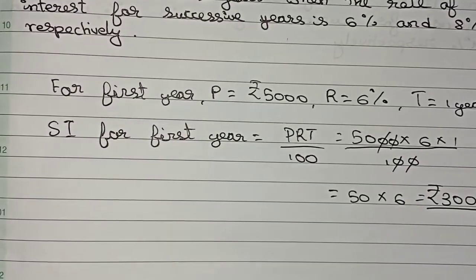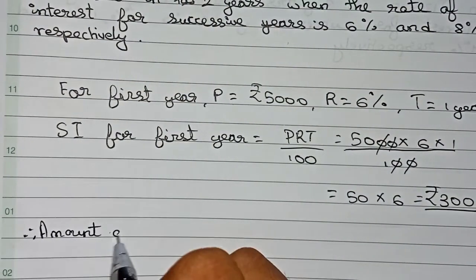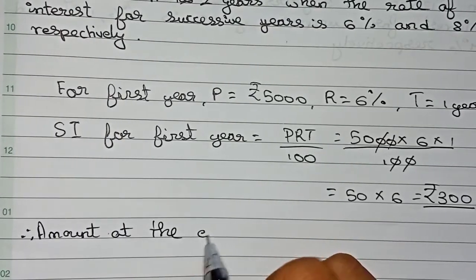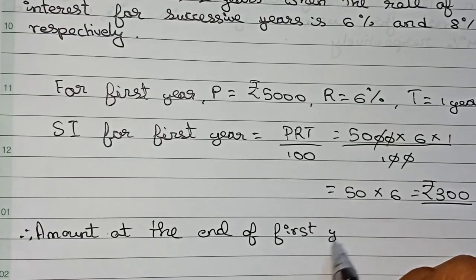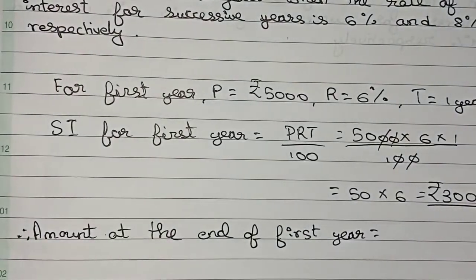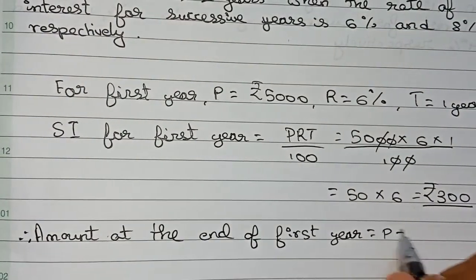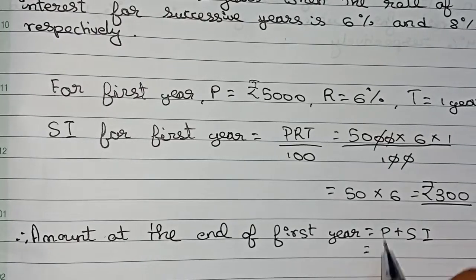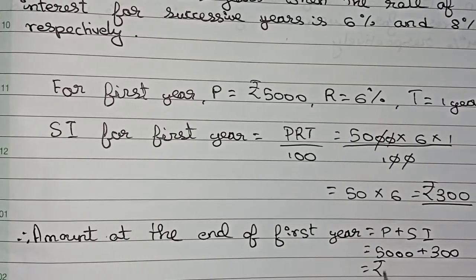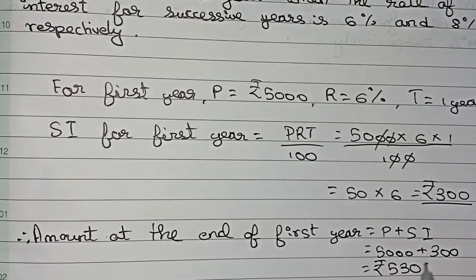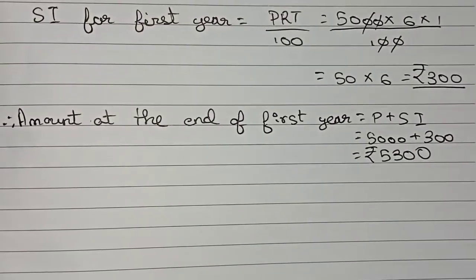Therefore, the amount at the end of the first year — that means after adding the SI to the principal — will be principal plus SI, which is 5000 plus 300, and it becomes rupees 5300. So this is the amount at the end of the first year.